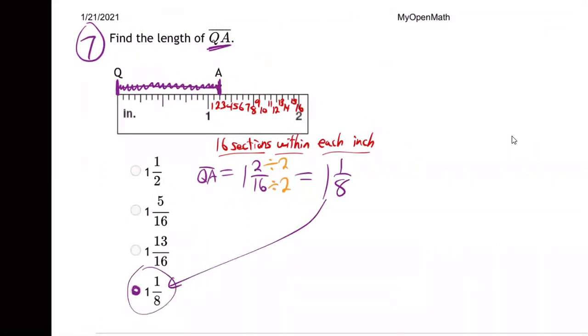So that makes sense. It's one and two sixteenths. QA, line segment QA, is one and two sixteenths more of another inch. One whole inch and two sixteenths more of another. Reduce that, one and one eighth inches is how long QA is. So there's practice using a ruler.